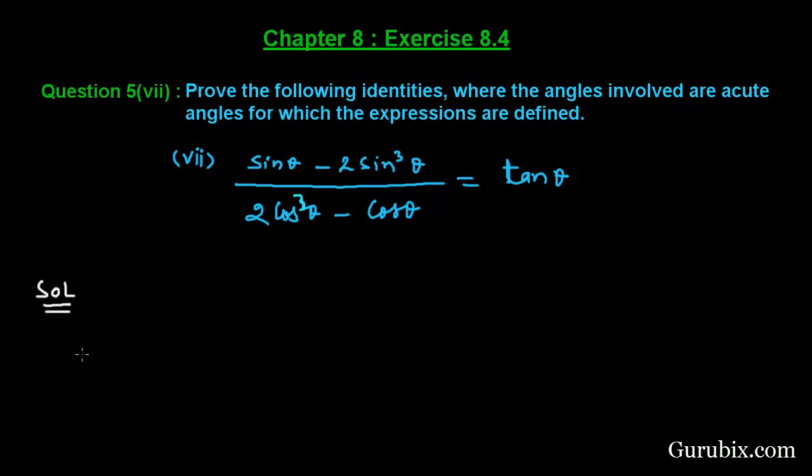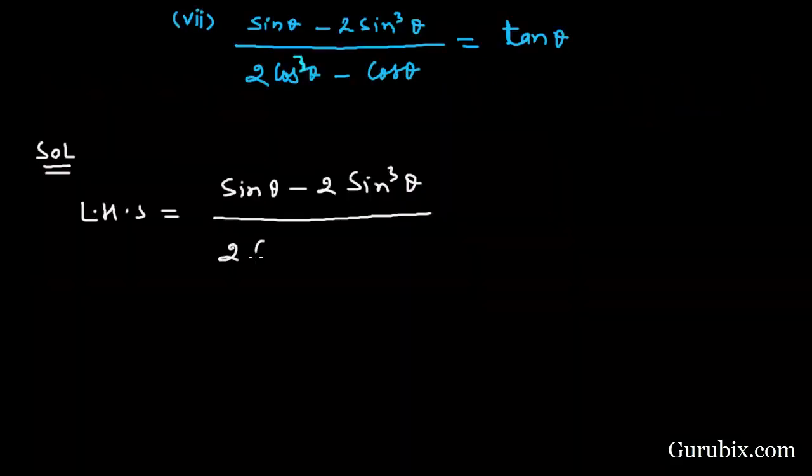We shall start with the left-hand side of the identity. The left-hand side is given as (sin θ - 2sin³θ) / (2cos³θ - cos θ).